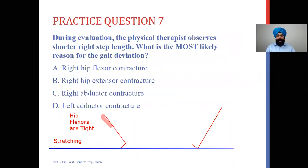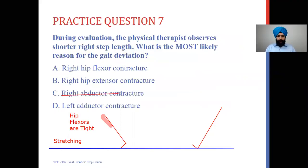The options are: A — right hip flexor contracture; B — right hip extensor contracture; C — right abductor contracture; and D — left adductor contracture. Using the same principle as before, I first stick to my plane. This question is about step length, which is in the sagittal plane. That means the right adductor/abductor contracture and the left adductor contracture are frontal plane options and can be eliminated.